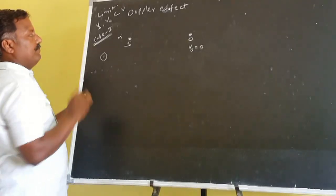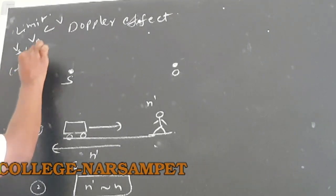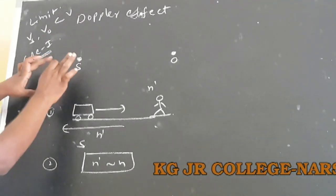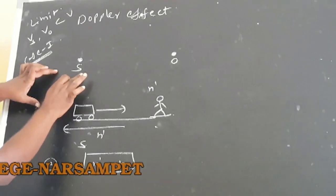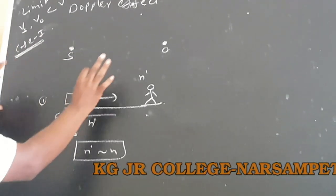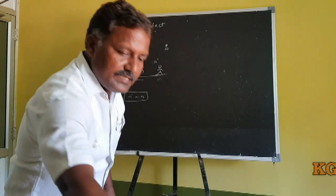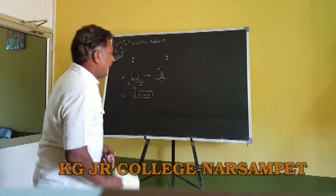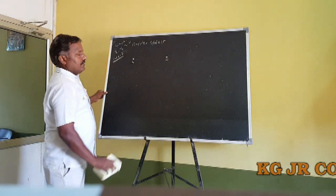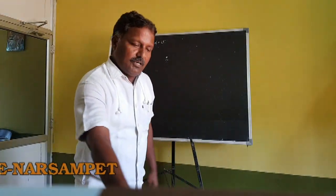Now let's discuss Case 1: source is in motion and observer is at rest. S is the source with velocity Vs, O is the observer with velocity V0. But since the observer is at rest, V0 equals zero.